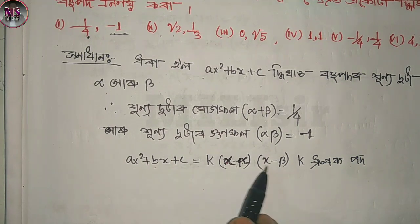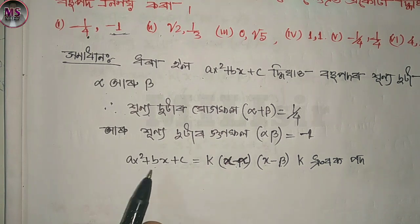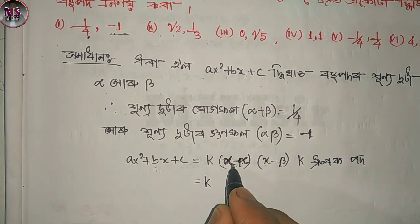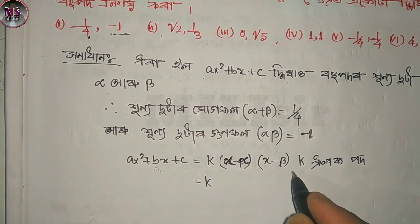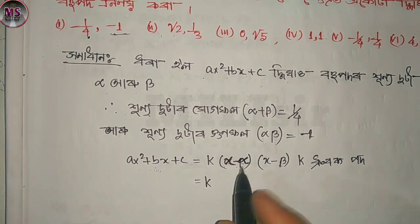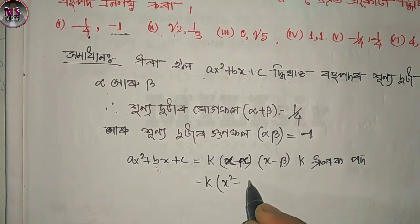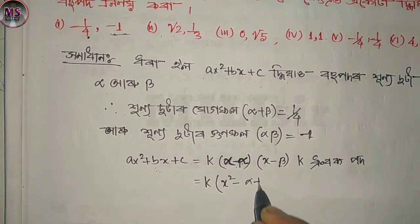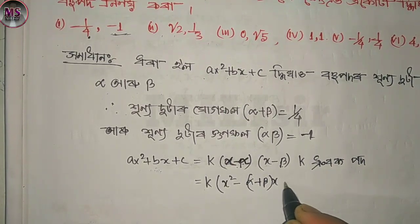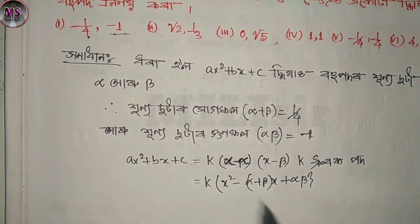So, x minus alpha and x minus beta, and K is the same. I will write x minus alpha, x minus beta. And then: minus alpha plus beta times x, plus alpha into beta.